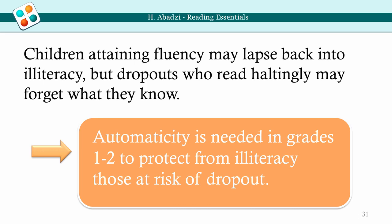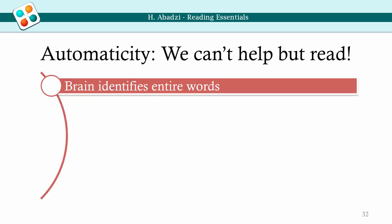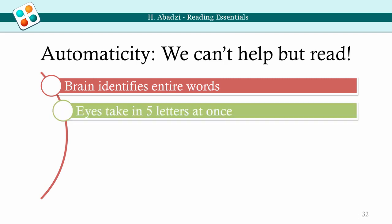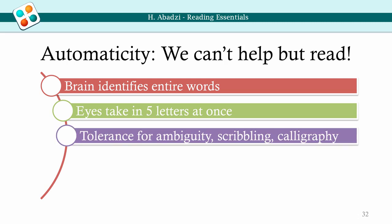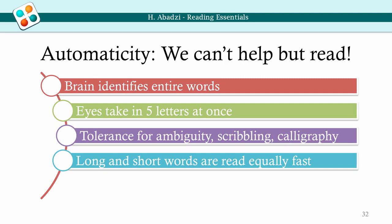Current knowledge leads to a clear instructional goal: children must become fluent readers in grade 1 or grade 2 at the latest. When we obtain automaticity, we can't help but read — just as we can't help but recognize known faces. The brain identifies entire words, but individual letters are still visible. Our visual system processes 4 to 5 letters at once, as if they were people's facial features. We require a tolerance for ambiguity — scribbling, calligraphy — just as we can distinguish our friends when they grow a beard or are seen in profile. These qualities are required for effortless processing of long texts. Then we focus on the message, rather than the print.